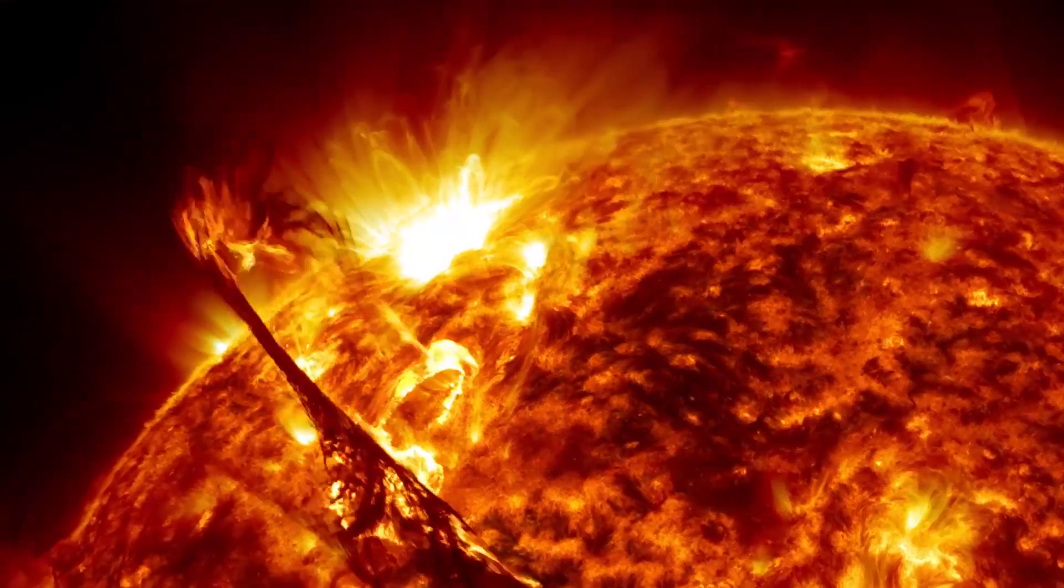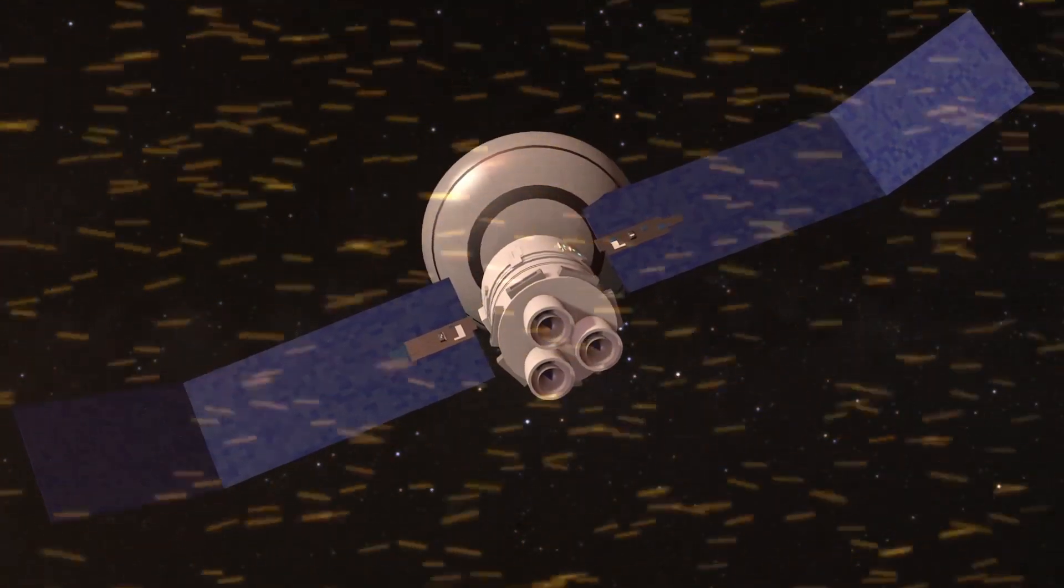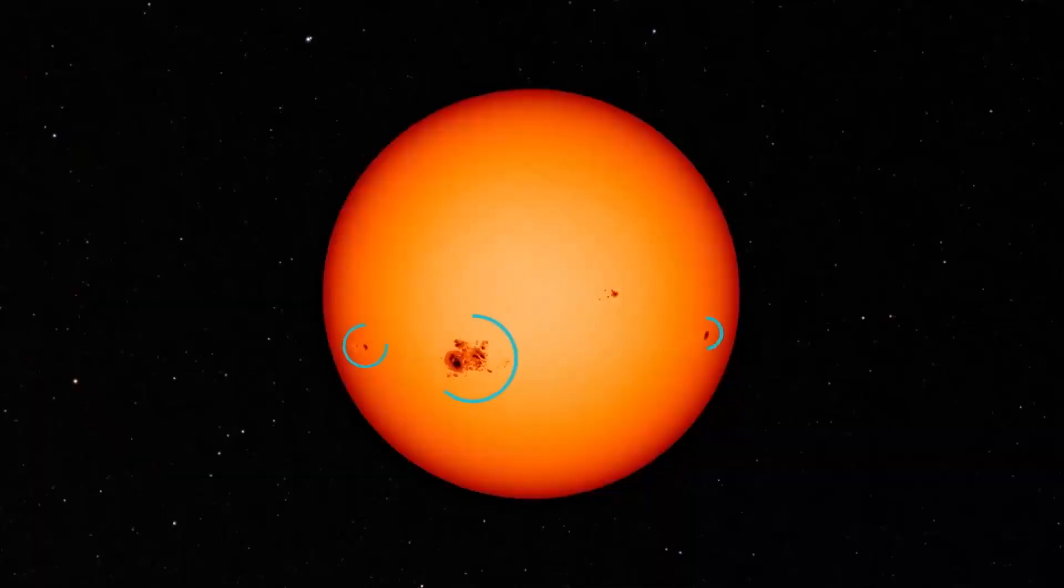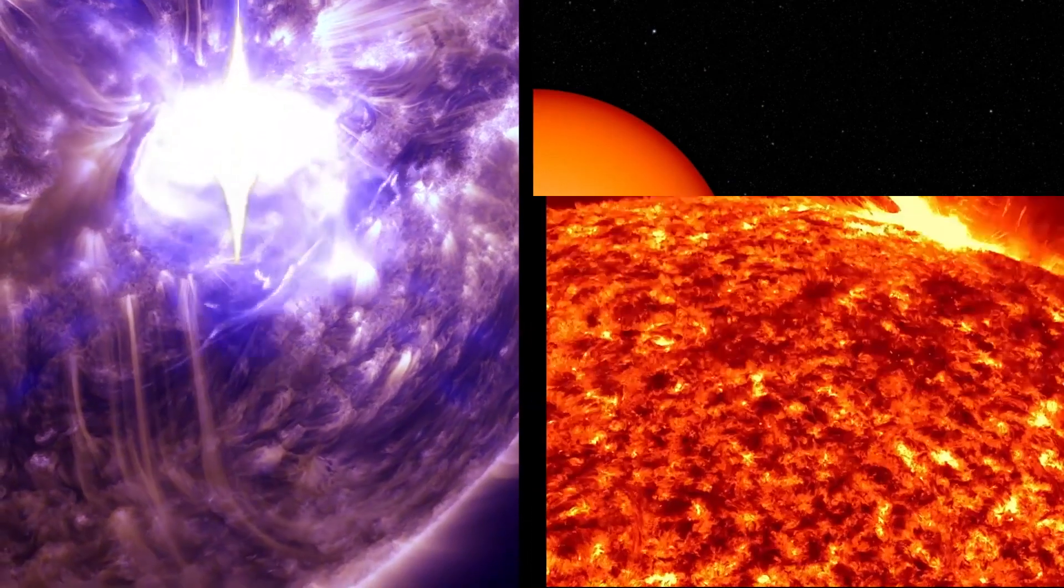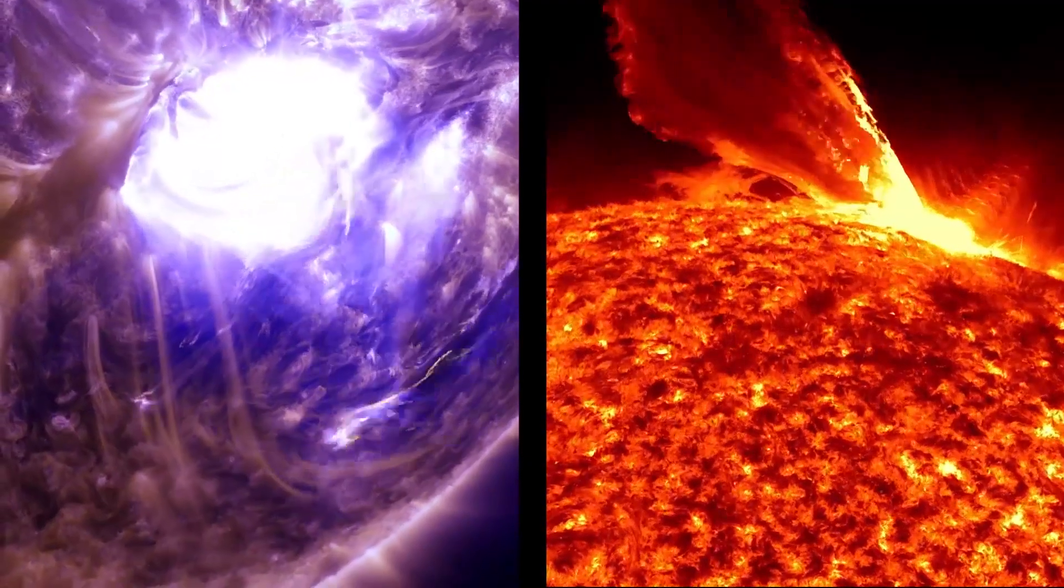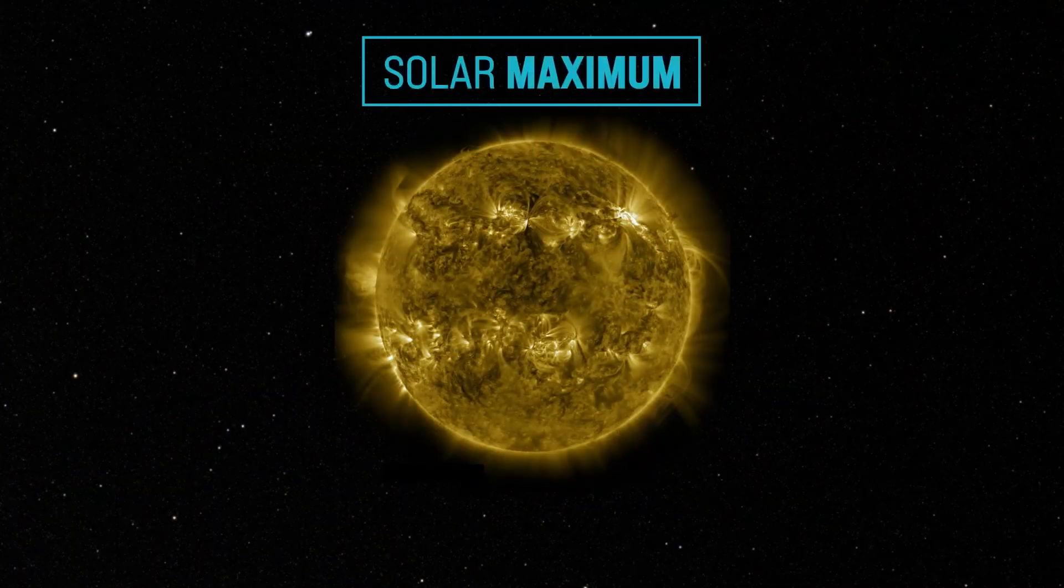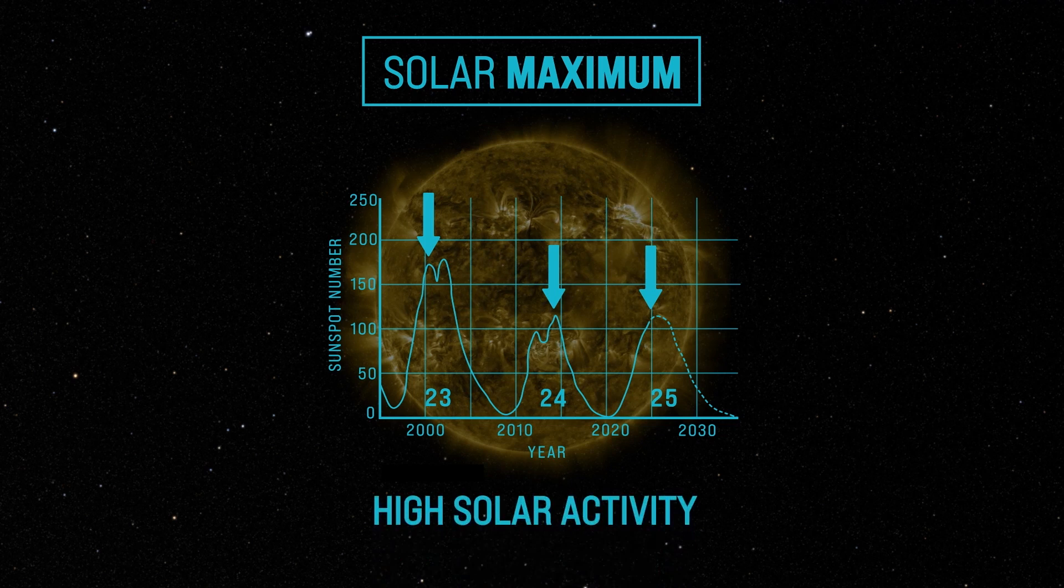Solar activity strongly influences conditions in space known as space weather. This can affect satellites and astronauts in space, as well as communications and navigation systems such as radio and GPS, and power grids on Earth. When the Sun is most active, space weather events become more frequent. Solar activity has led to increased aurora visibility and impacts on satellites and infrastructure in recent months.